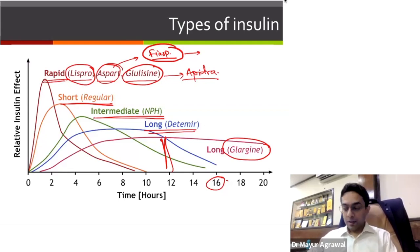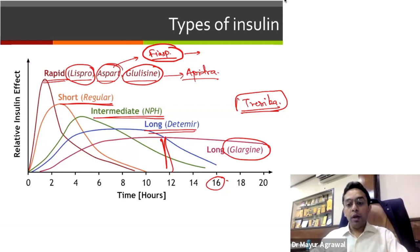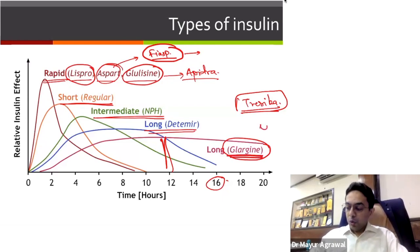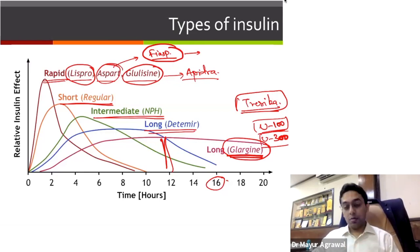One insulin I haven't mentioned is Degludec, which comes by the name Tresiba from Novo. It is even longer-acting than Glargine — Glargine works between 16 to 22 hours, whereas Tresiba works up to 24 hours and possibly beyond. We also have different strengths: U100 means 100 units per ml, and U300 means 300 units per ml. U300, which comes as Toujeo, is a second-generation basal analog. Degludec and U300 are second-generation basal insulins.